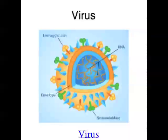Viruses must enter a host cell to reproduce. They use the components of the host cell as a source of energy and to assemble new viruses, and they ultimately destroy the host cell so that the new viruses are released to infect other cells. Because viruses are inside cells when causing damage, it's really difficult to inhibit viral reproduction without interfering with the host cell's metabolism, which makes developing antiviral drugs quite challenging.